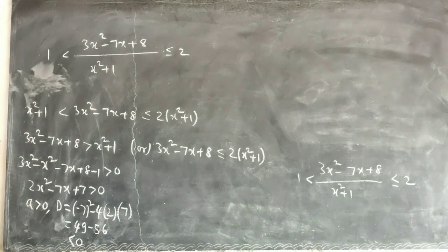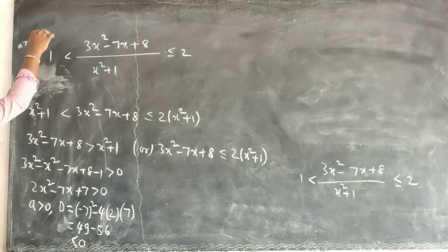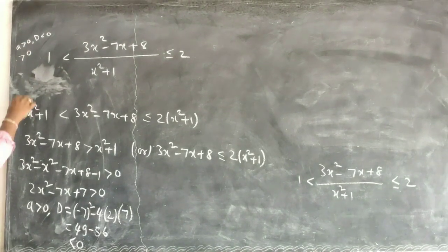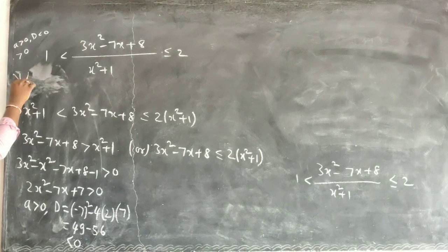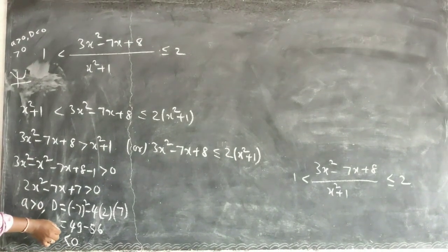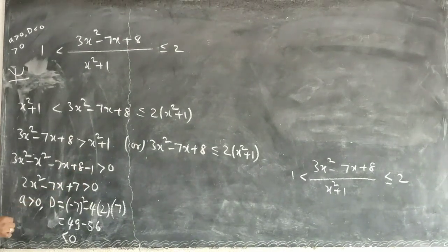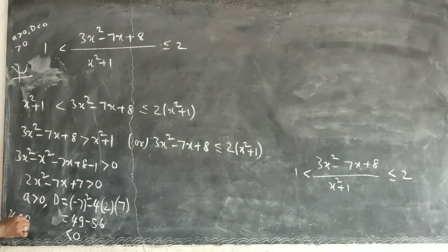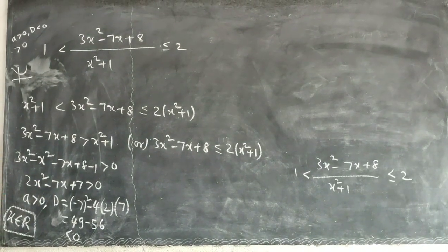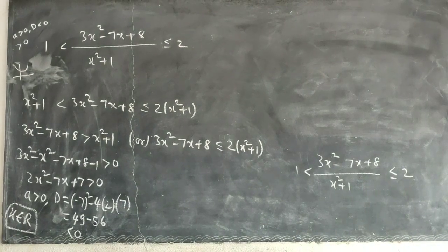As I told you in the previous section: if a is greater than 0 and D is less than 0, the whole quadratic is positive. So this whole expression is positive. Therefore the solution for this condition is x belongs to all real numbers — any real number substituted will satisfy this.